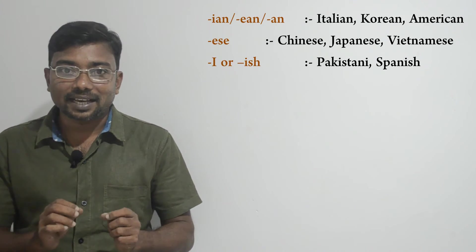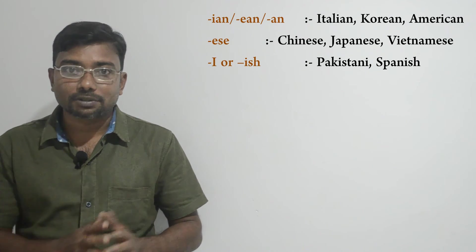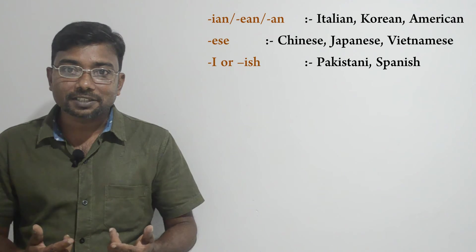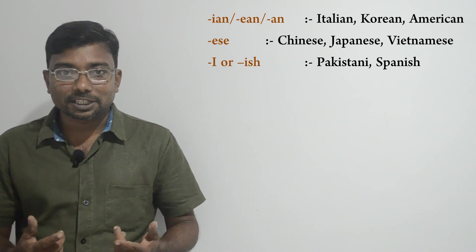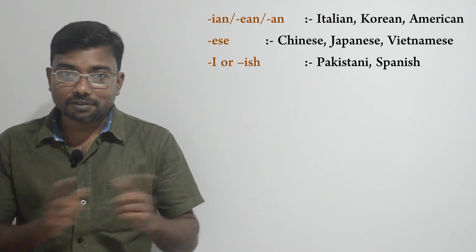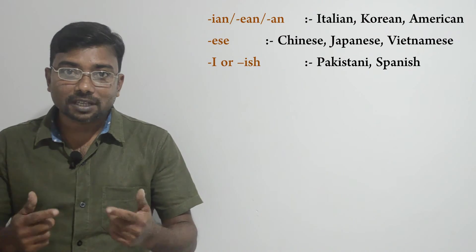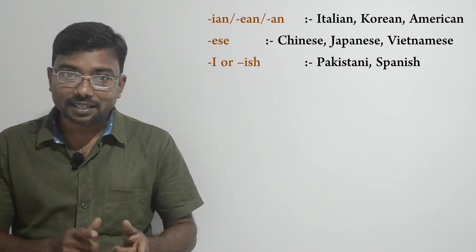Let's look at how to form proper adjectives from proper nouns. We use suffixes added to proper nouns to make proper adjectives. For example, we use suffixes '-ian', '-ean', or '-an' to make proper adjectives. For example: Italian, Korean, American. These words act as proper adjectives formed from the proper nouns Italy, Korea, and America by using these suffixes.